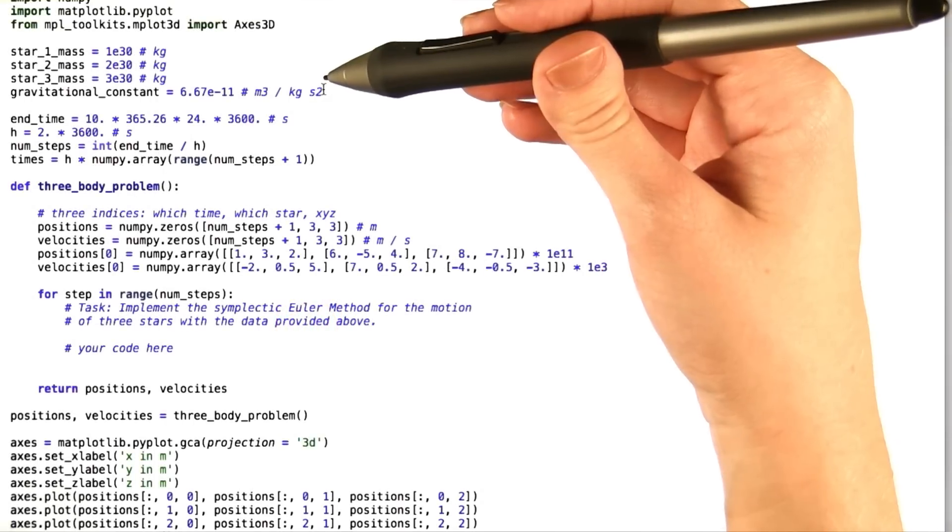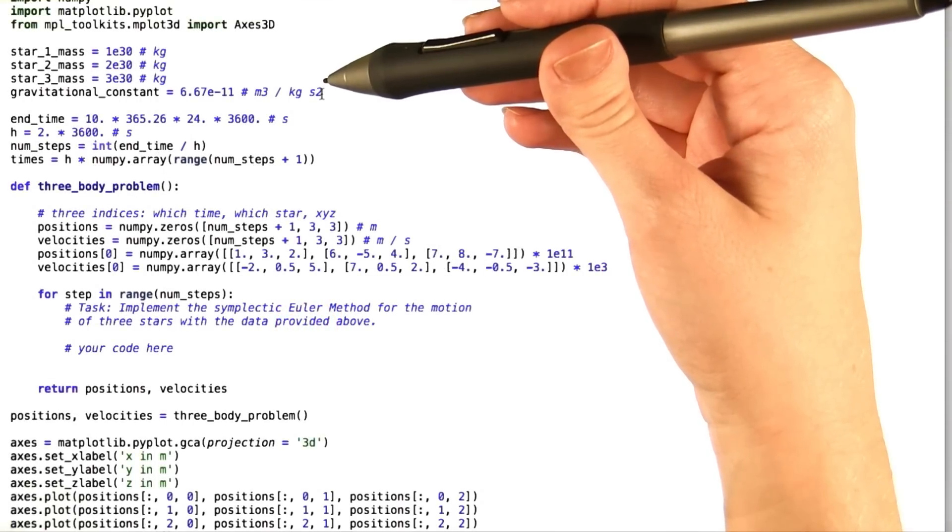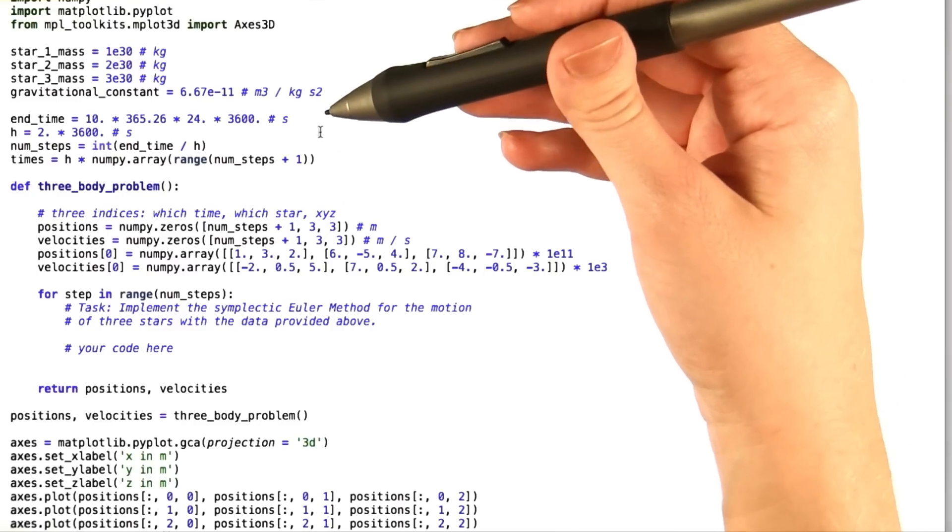In the code, you can see that we've written out the mass of each star for you, as well as the gravitational constant, big G. We've dealt with everything concerning time for you.